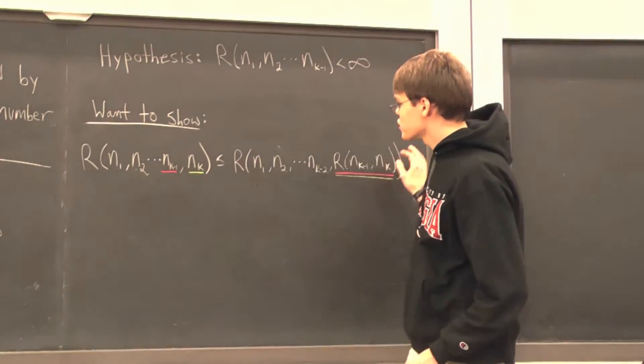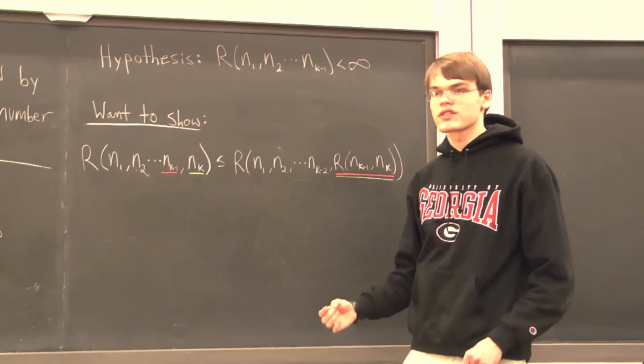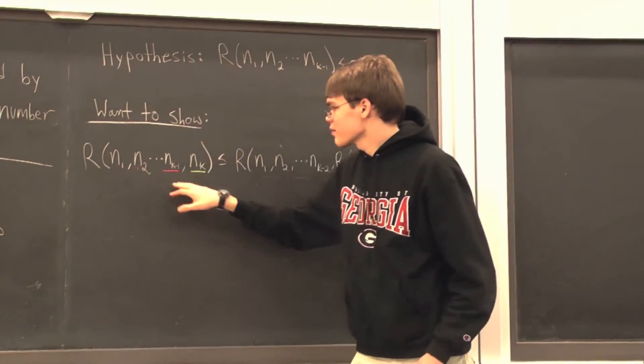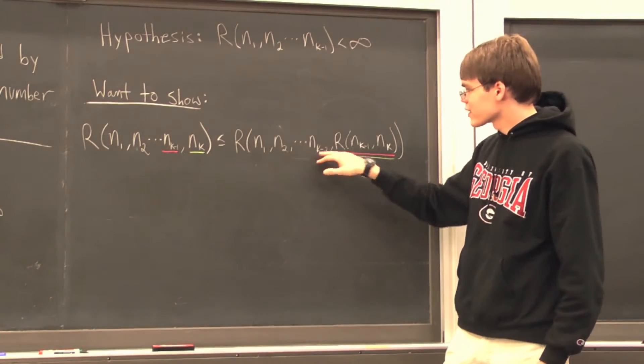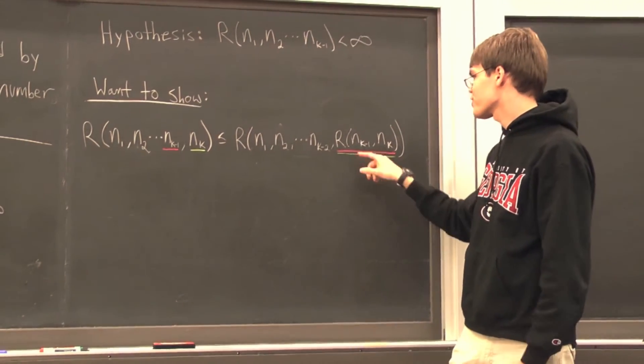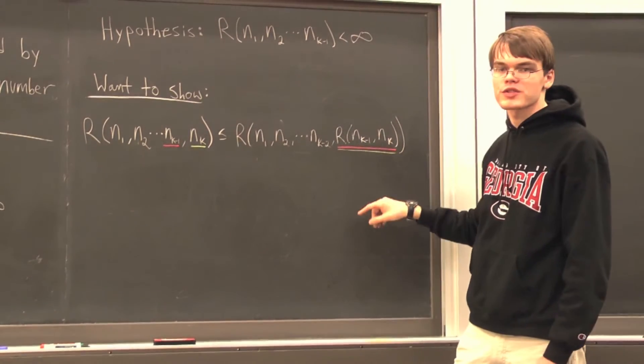And so, to show this, it's going to be sufficient to show that the Ramsey number on k colors is going to be less than or equal to r(n₁, n₂, ..., nₖ₋₂, r(nₖ₋₁, nₖ)).